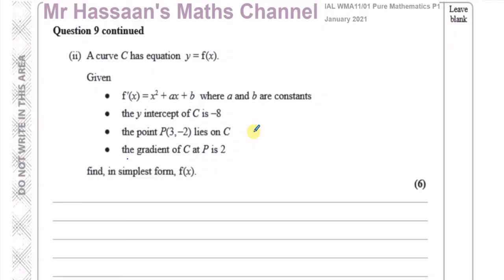This question is about a curve c which has equation y equals f(x). We're told that the first derivative — the gradient function of y = f(x) — when you differentiate, you end up with x squared plus ax plus b, where a and b are constants. We're told the y-intercept of the original function f(x) is minus 8, the point (3, −2) lies on curve c, and the gradient of c at point P is equal to 2.